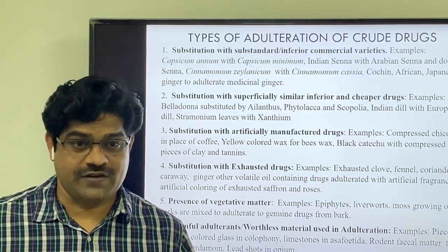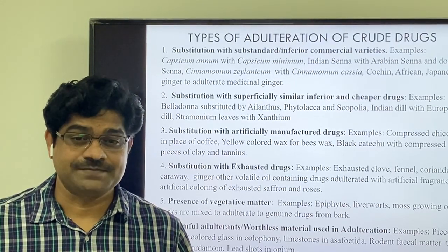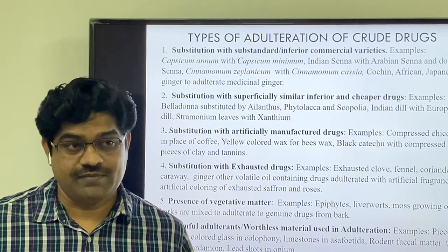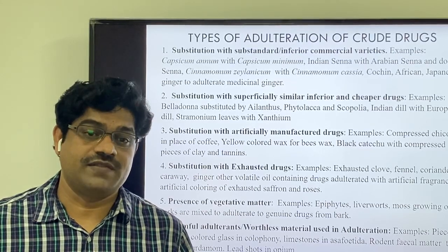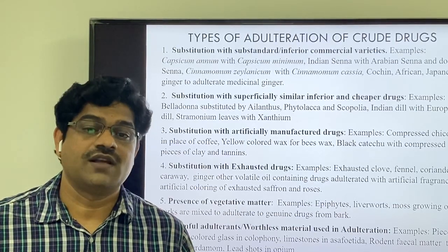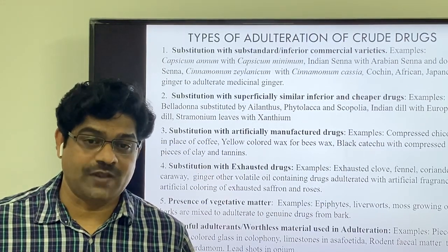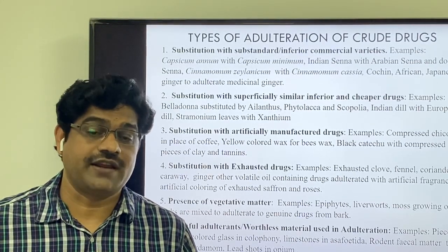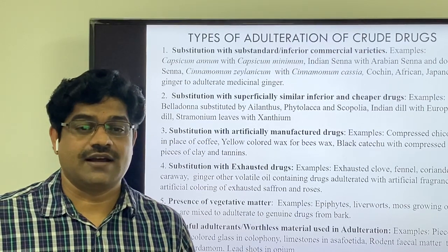The next type is substitution with exhausted drugs. Drugs containing volatile oils have their active constituents extracted until exhausted of these important phytoconstituents. They are then adulterated with artificial fragrance to present them as the authentic drug. Another example in this category is the artificial coloring of exhausted saffron and roses.